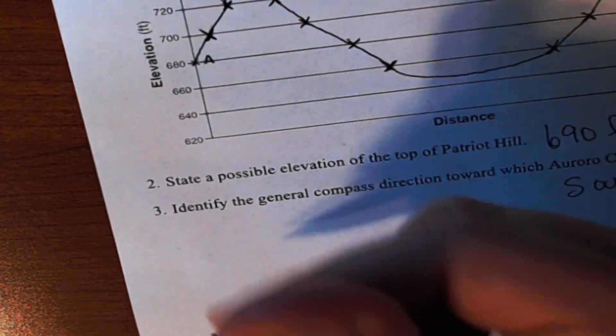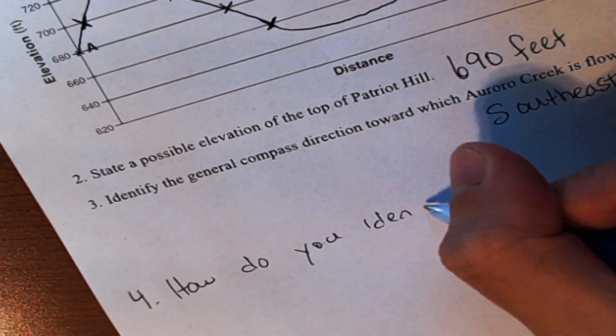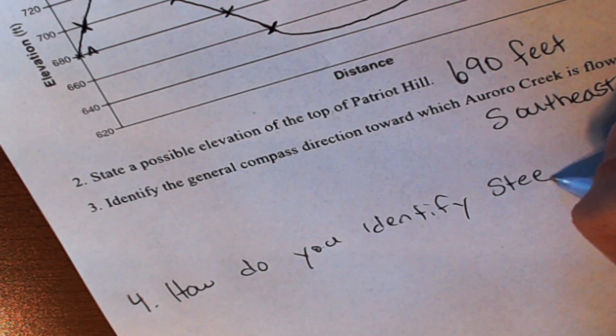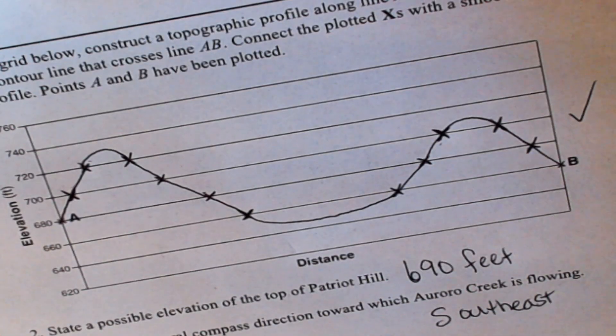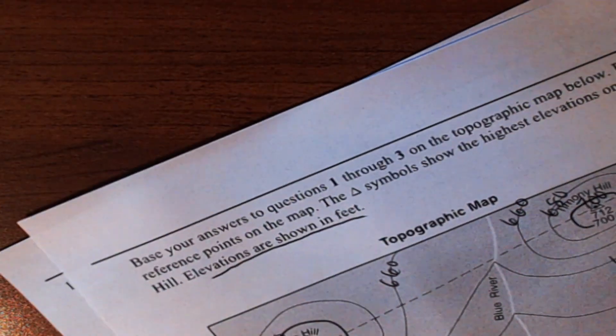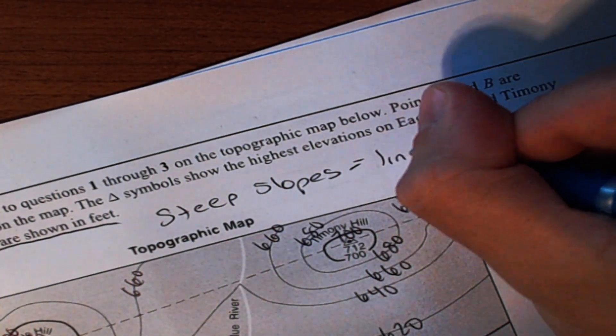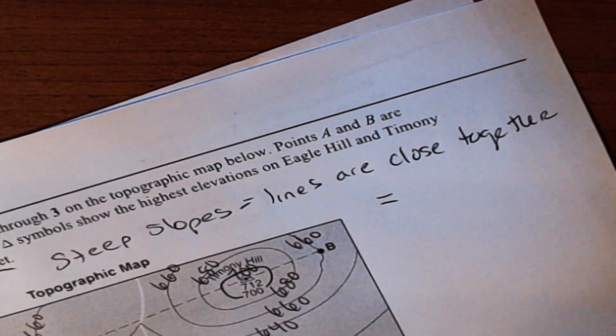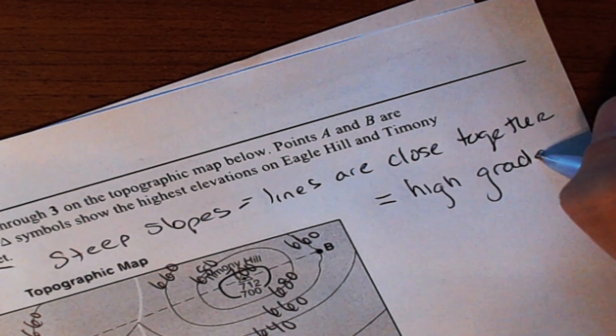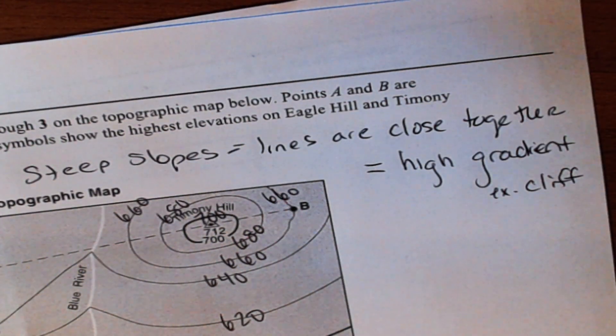The last question that I wanted to go over real quick as a bonus is how do you identify steep or gentle slopes? So in order to identify a steep or gentle slope, you're going to go to your map. Here's what you're going to have to remember: steep slopes equals the lines are close together, which also means it has a high gradient. So that's like a cliff, essentially. So if you can remember that, you'll know the opposite. Gentle slopes are when the lines are far apart, and that would be a low gradient, or like a flat area.